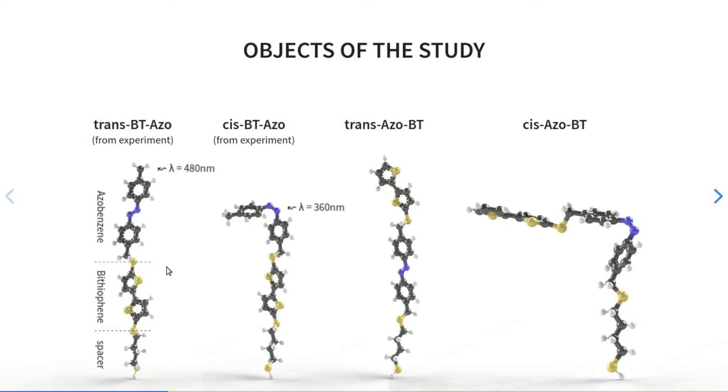The molecules differ from each other in a sequence BTO and OTO. Each molecule has two configurations – trans and cis.